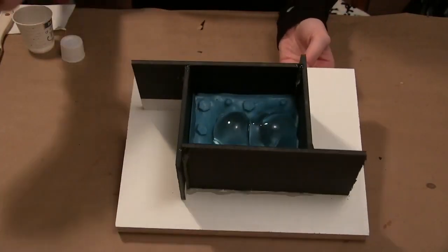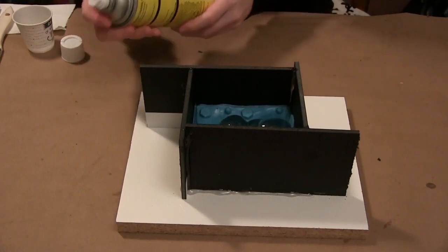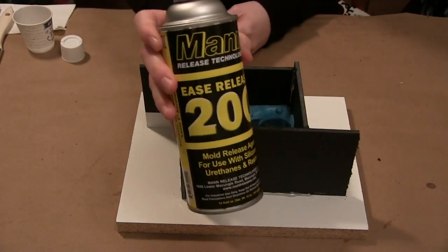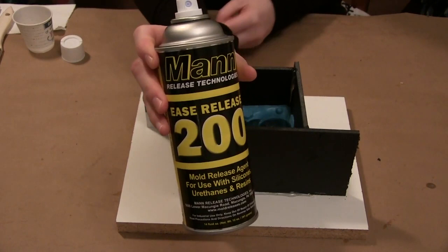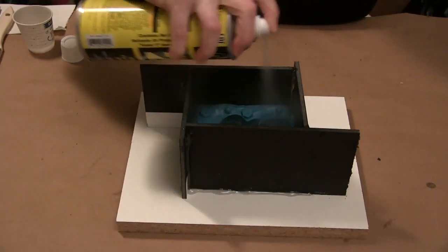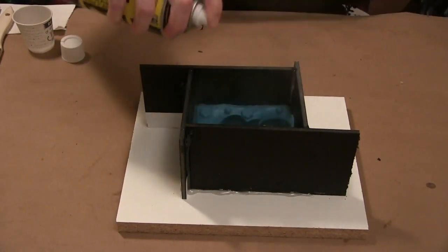The next step is to coat your mold rubber with release spray. This is a very important step. I'm using the Ease Release 200. You're also going to want to do this in a well-ventilated area.